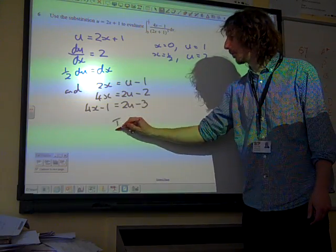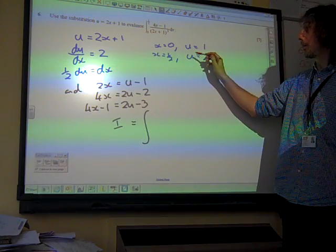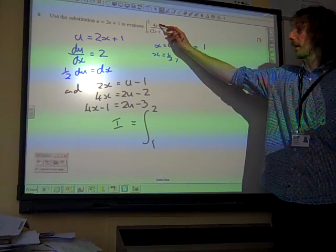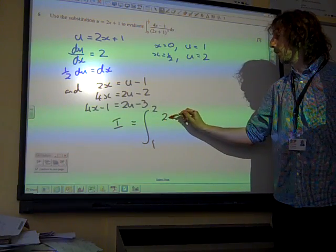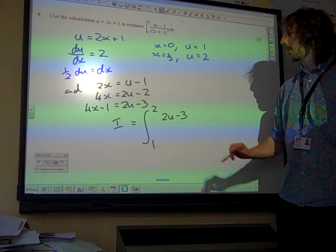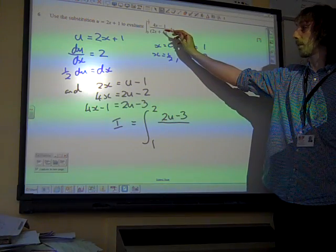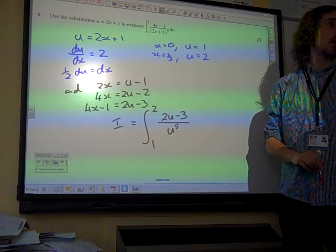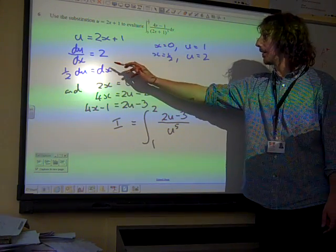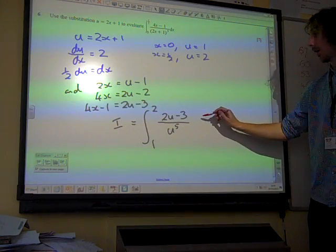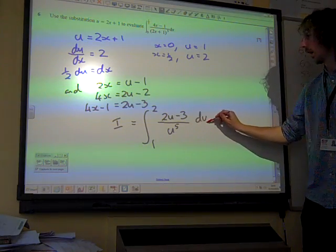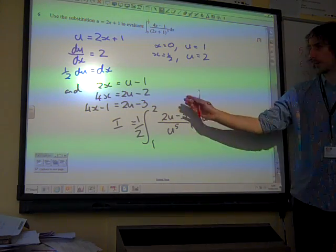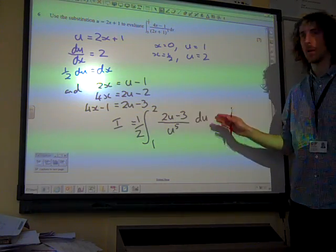The integral, I've changed the limits from 0 to a half to 1 to 2. The top line, instead of 4x minus 1, I now know is 2u minus 3. The bottom line, instead of 2x plus 1 to the 5, is u to the power of 5. I'm replacing dx with a half of du. I'm actually going to write it like that, because I can take a whole factor outside the integral. So a half of the integral du.